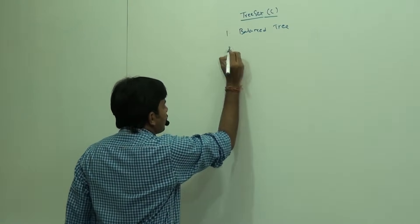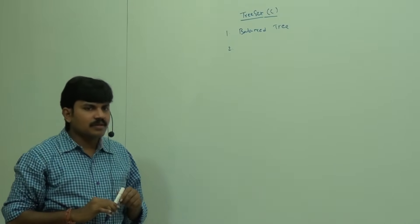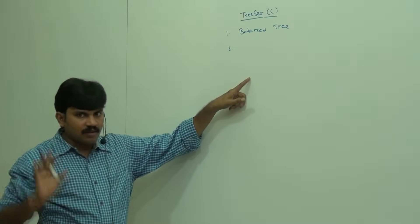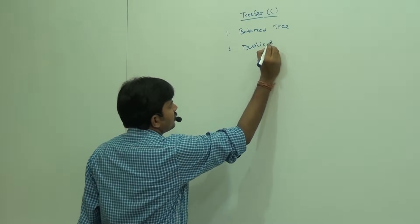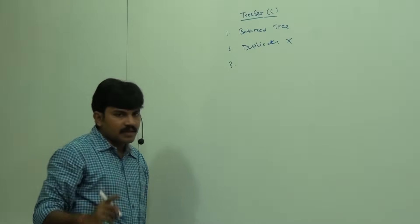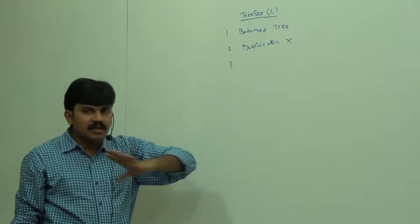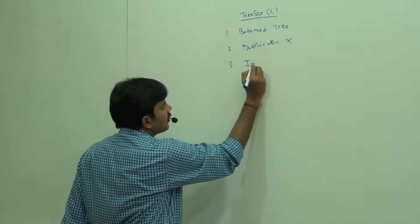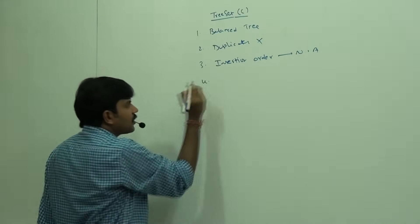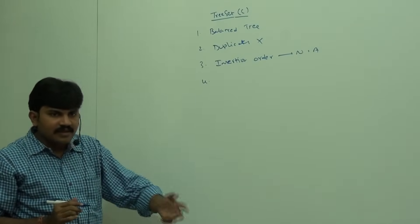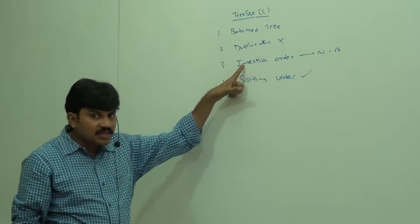Duplicate objects are not allowed in TreeSet because it is a Set, and Set properties disallow duplicates. Insertion order is not applicable — it's a Set. But all elements will be inserted according to some sorting order, so sorting order is applicable but insertion order is not preserved.